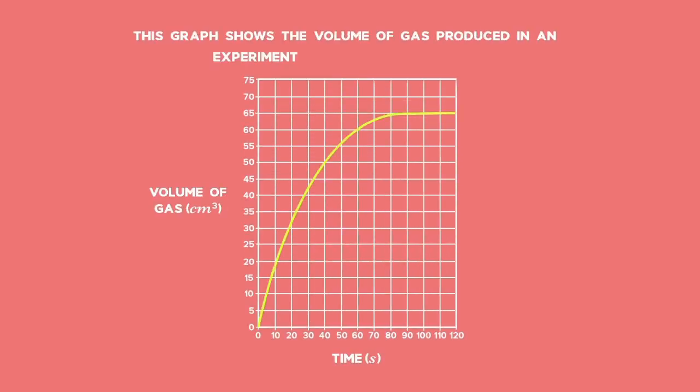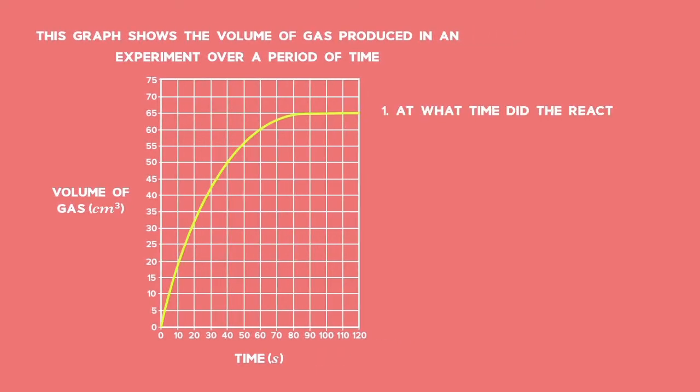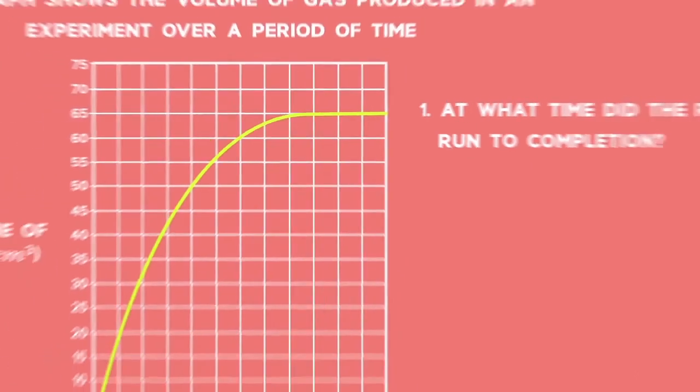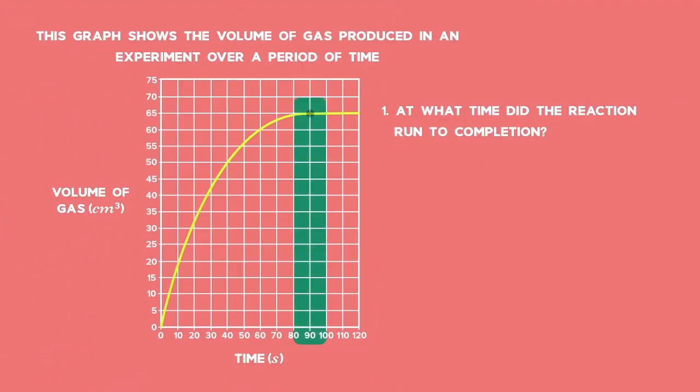Let us look at a question on rates and extent of reactions. Looking at the graph, at what time did the reaction run to completion? Here we look at where the graph is parallel to the time axis and read off the time. At 80 to 90 seconds, we see the gradient getting towards being flat. Close to 90 seconds, the volume of gas is no longer increasing, meaning that the reaction has stopped.